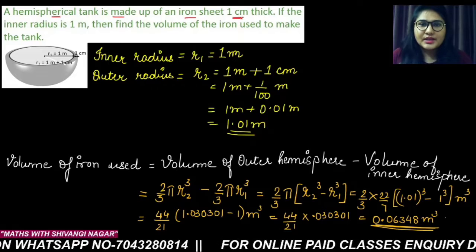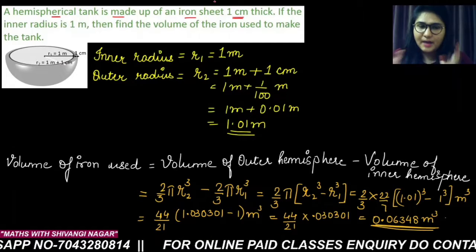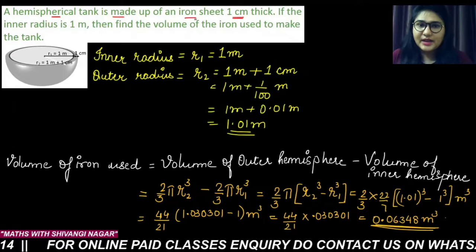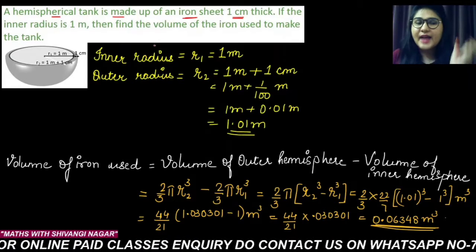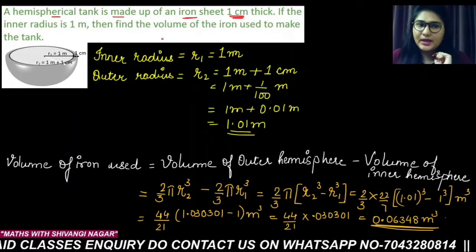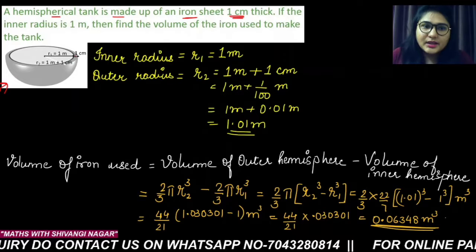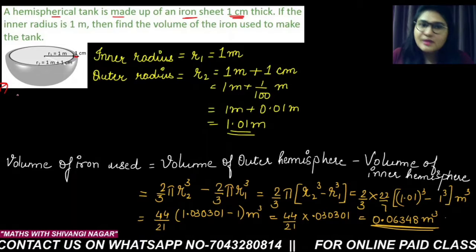We are given a hemispherical tank which is made up of a certain material, that is the iron sheet, and that iron sheet thickness is given to us—it is 1 centimeter. If you see this diagram, what is the thickness? This part is the thickness of the sheet, and this is 1 centimeter.